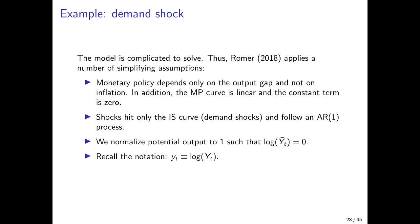Additionally, shocks hit only the IS curve — so there are only demand shocks, with other shocks set to zero — and these shocks follow an autoregressive process of order 1. Potential output is normalized to one, such that the logarithm of potential output equals zero. This means we measure everything in deviations from potential output, and all terms related to potential output drop out. Lowercase letters denote the logarithm of the corresponding uppercase variable.